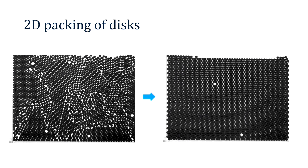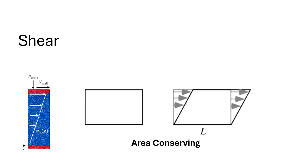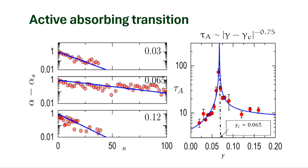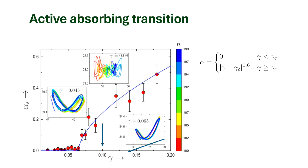Here the density is kept constant and the shaking protocol (gamma) is changed. You can measure alpha-s, the fraction of active particles at the end. There is a timescale for reaching steady state with a divergence, and this exponent is 0.75 - exactly what I had seen in the dynamical system also. The transition criterion showed an exponent of about 0.75.